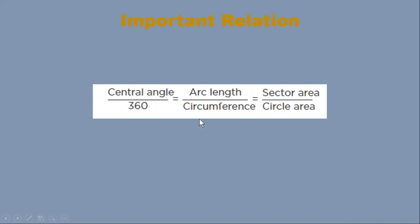the arc length, and the sector area. The central angle divided by 360 degrees equals arc length divided by the circumference, which equals sector area divided by the total area of the circle. The total area is πr² and the circumference is 2πr.